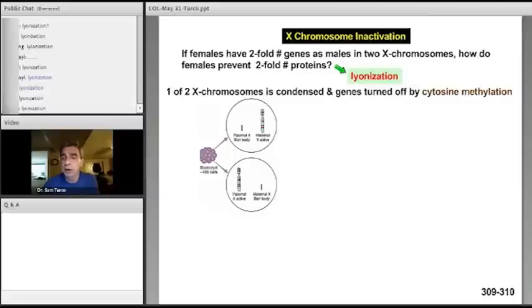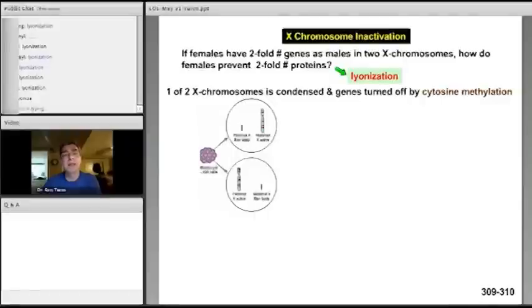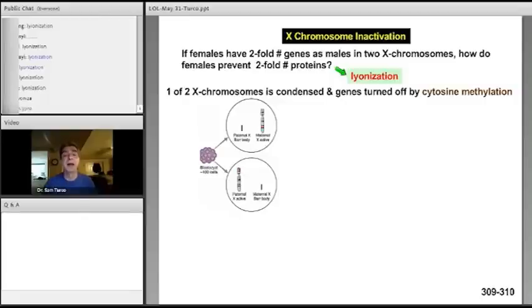So if you see this word on a national board exam, it's referring to the fact that one of the two X chromosomes in a female's cells will undergo complete cytosine methylation of the genes and all the genes are condensed into heterochromatin. The entire X chromosome becomes heterochromatin, and that is called a bar body. But the process of doing that is called lyonization, after the person who discovered it, named Lyon.